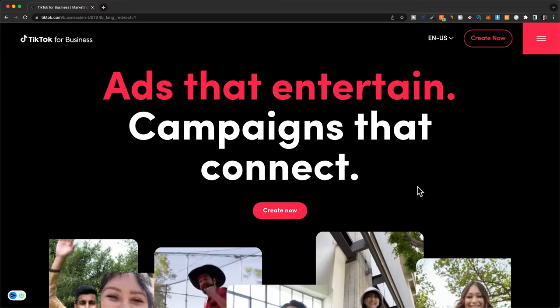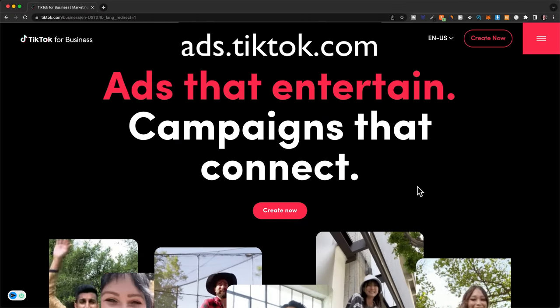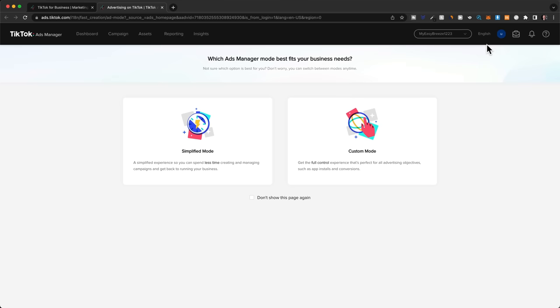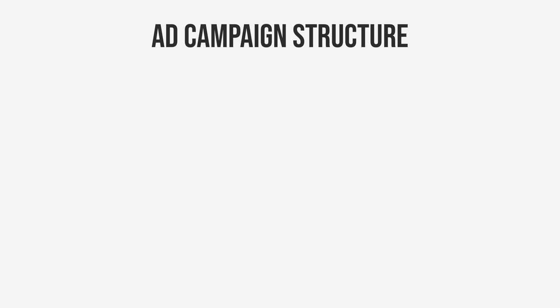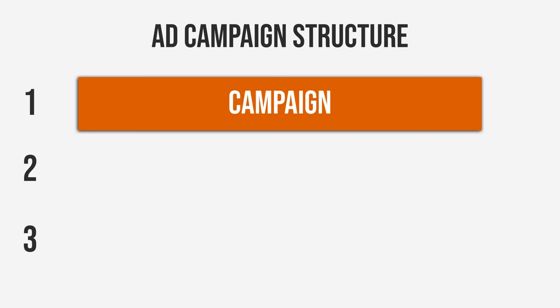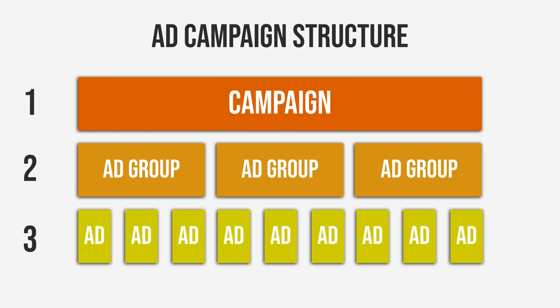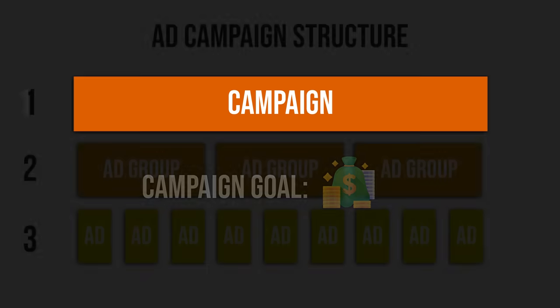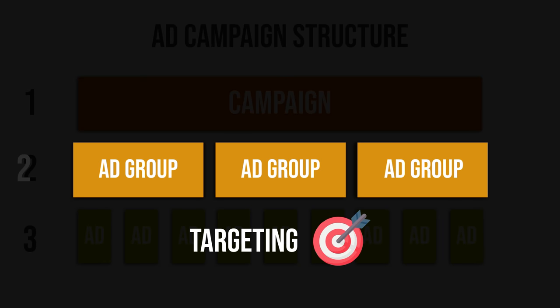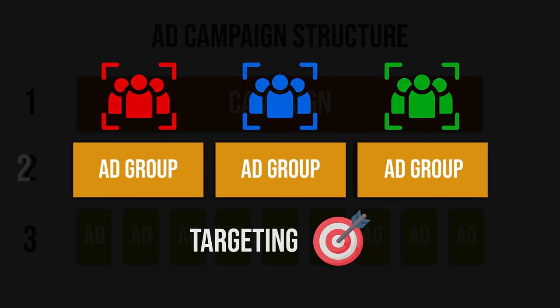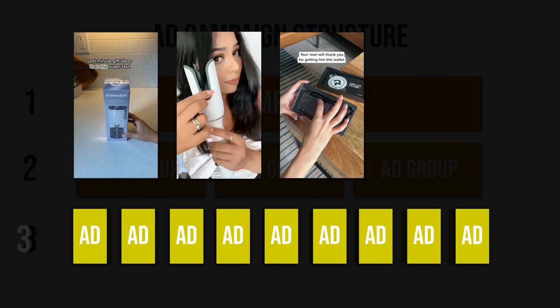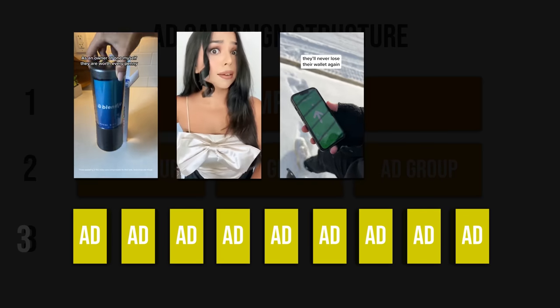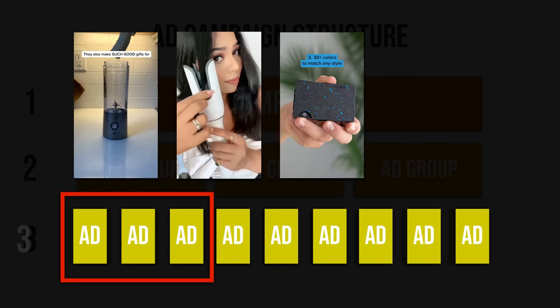To set up our TikTok ads, go to ads.tiktok.com and click on create now at the top. Before setting up our campaign, let me quickly show you how a paid ads campaign is structured. A campaign has three levels: the first level is the campaign itself, the second level are the ad groups, and the third level are the actual ads. On the campaign level we tell TikTok the main goal — in our case, sales on our store. On the ad group level we define who we want to show our ads to, and we can have multiple ad groups to test different audiences. On the ad level we create the actual ad that TikTok users will see in their feed, and we can have multiple ads in one ad group to test which creatives result in the most sales.